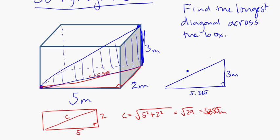Now we have a second set of Pythagoras, and this will be the longest side. It's going to be equal to the square root of 5.385 squared plus 3 squared, and put that into our calculator. We get 6.16 meters. That's the longest dimension that goes inside the box. That's this one here, 6.16 meters.